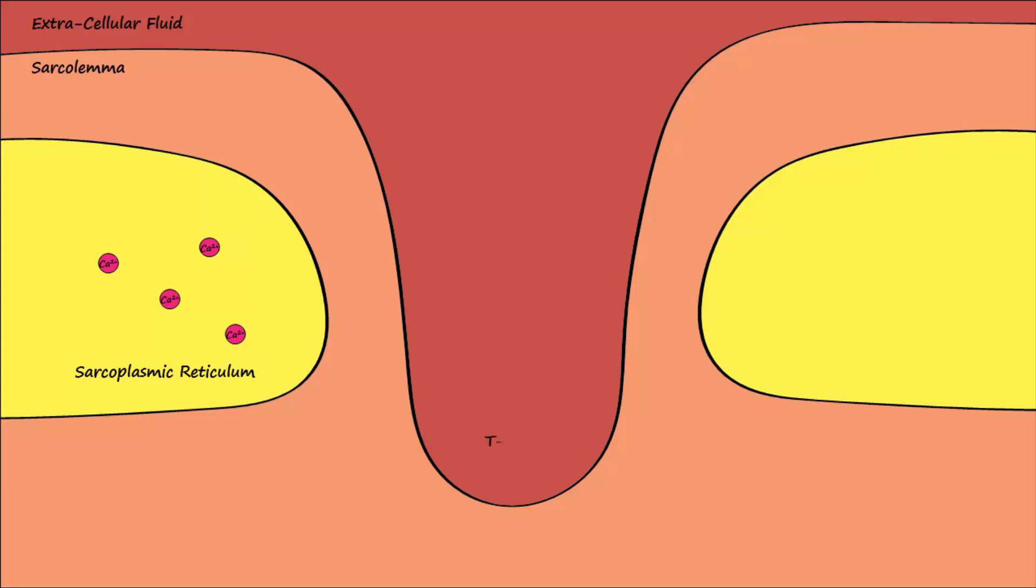Along the T-tubule, there are dihydropyridine receptors, also known as L-type calcium voltage-gated channels. Coupled to these channels, but embedded in the sarcoplasmic reticular membrane, are other calcium channels called ryanodine receptor channels. The ryanodine subtype RYR1 is located in the skeletal muscles.